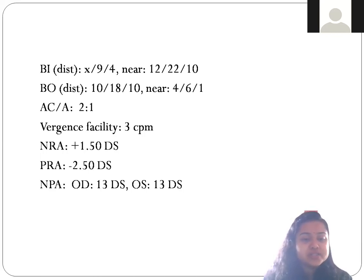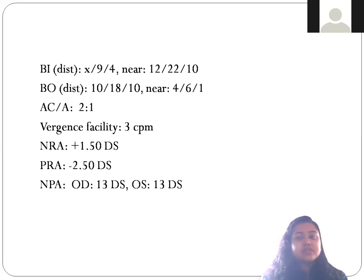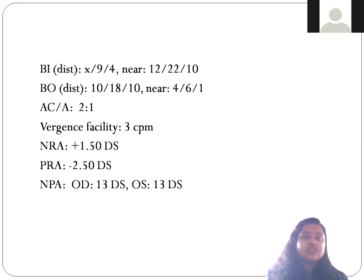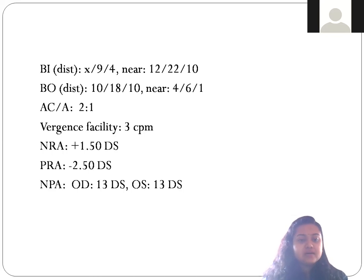Checking accommodation: we find 13 diopters in the right eye and 13 diopters in the left eye. What should be the normal amplitude of accommodation for this child? Using Hofstetter's formula: 18.5 minus 0.3 times age. The child's age is 11, so 0.3 × 11 = 3.3, giving 18.5 minus 3.3 — approximately 15 diopters should be the normal amplitude of accommodation.